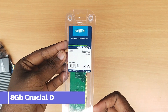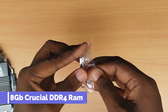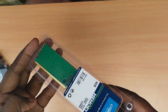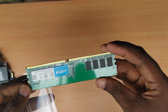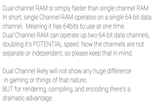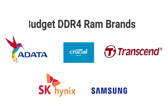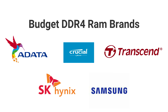We use 8GB DDR4 RAM. You can also use a 4GB DDR4 in dual channel configuration. If you want higher-end RAM, there is the Corsair Vengeance RAM at 3000MHz.